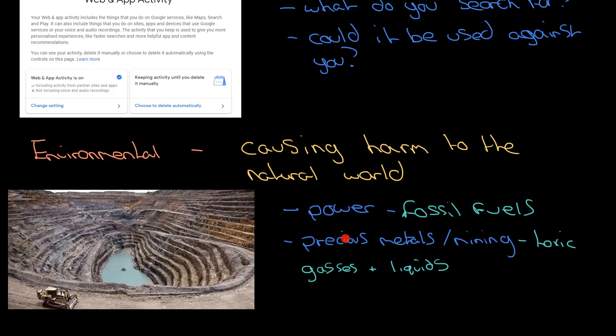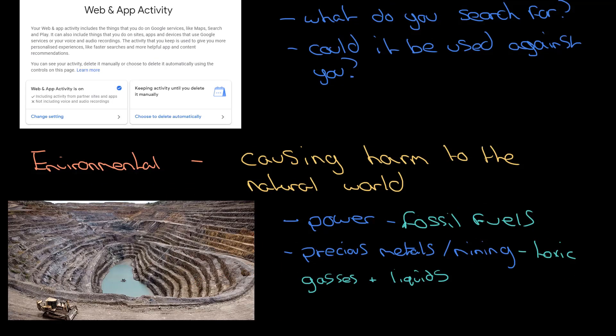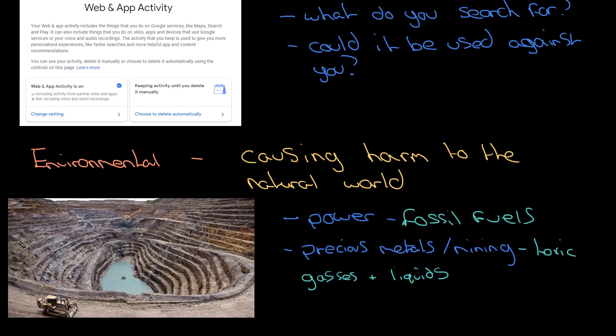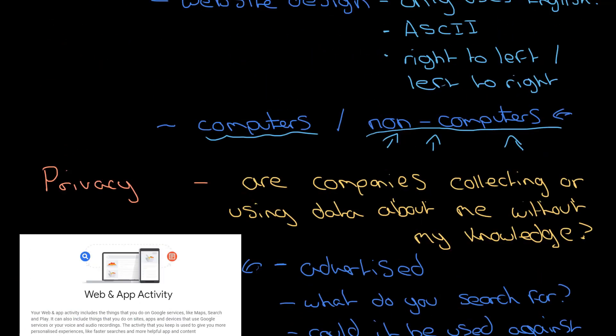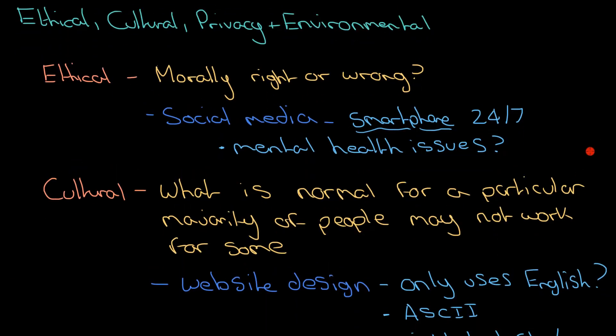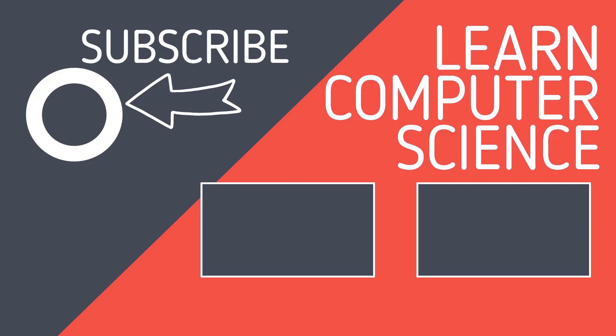So those are some basic introductions to the problems that computer use causes: environmental issues, privacy issues, cultural issues, and ethical issues. It's important we don't hide away from these problems and that we're aware of them, because then we can start to do something about them. If you found that video useful, please hit the like button and subscribe to the channel to keep learning and revising computer science.